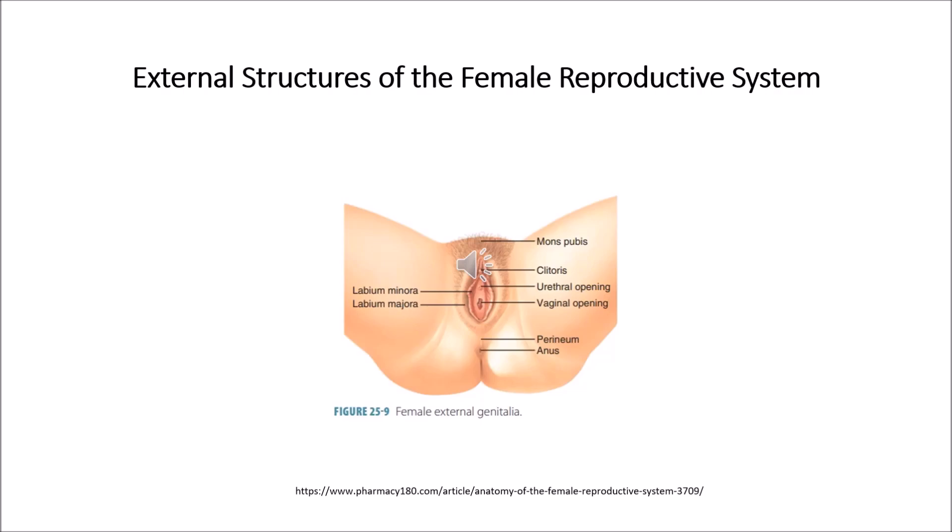Fertilization of an egg by a sperm normally occurs in the fallopian tubes. The fertilized egg then moves to the uterus, where it implants into the uterine lining.